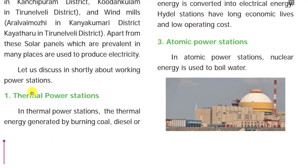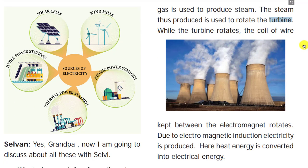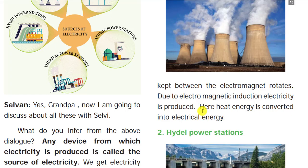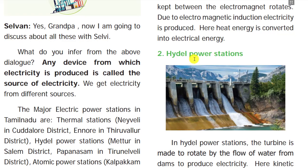First we are going to see about thermal power stations. Thermal means heat. Burning of coal, diesel, or any material produces steam. The steam rotates the turbine — a small fan-like structure. The rotating turbine moves a coil, and through electromagnetic induction it produces electricity. We can correlate this simply: when we give electricity the fan will rotate, and in the same way when we rotate the fan, electricity is produced. That fan-like structure is called a turbine.